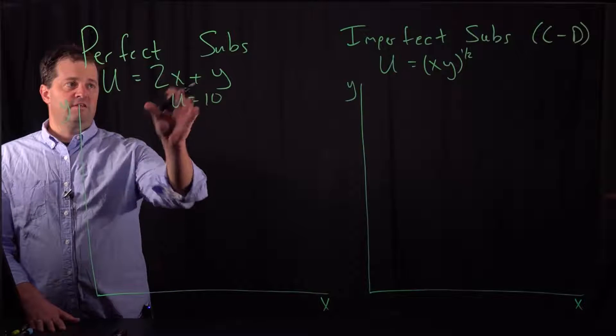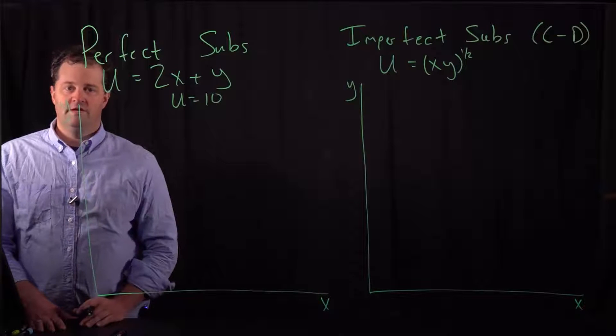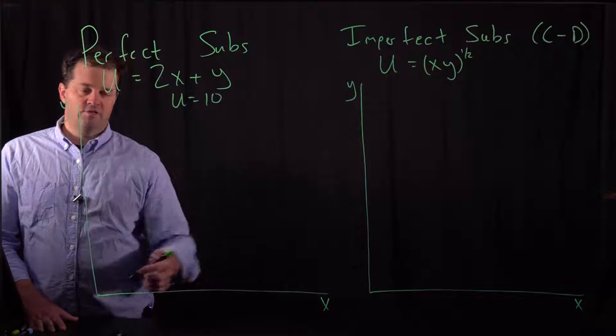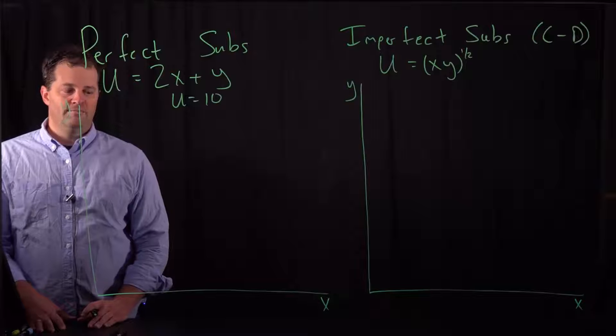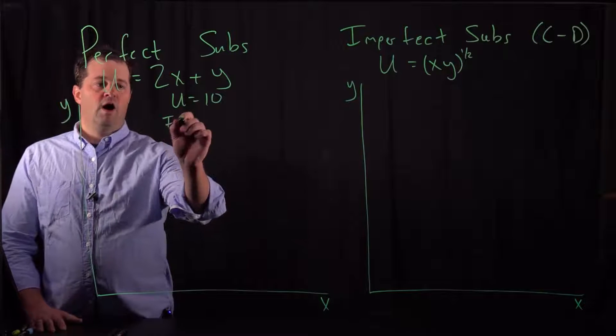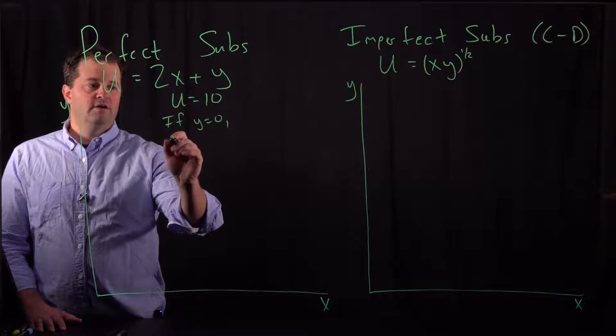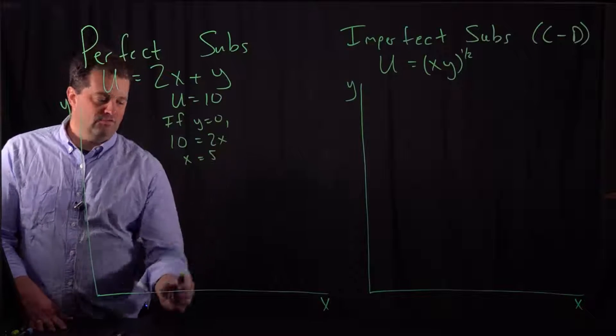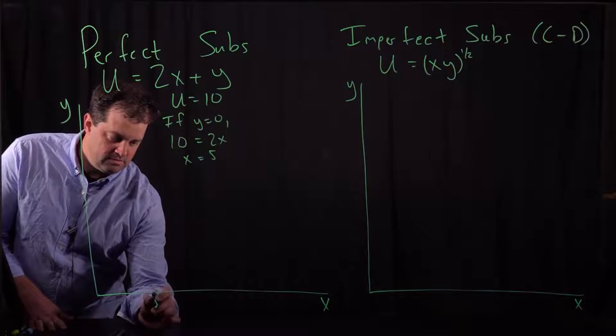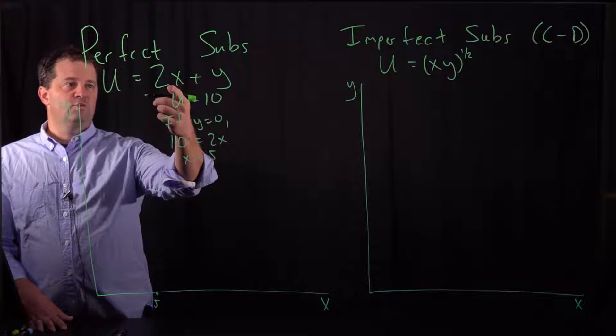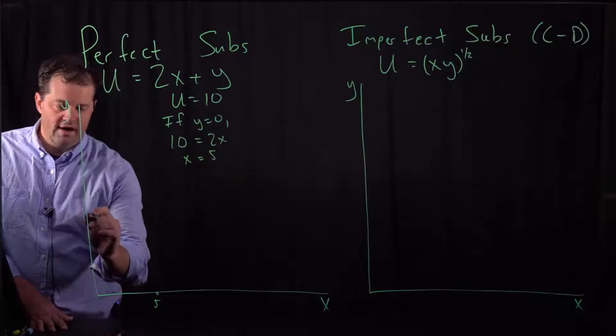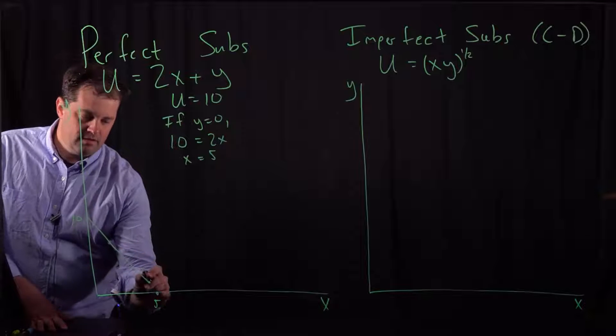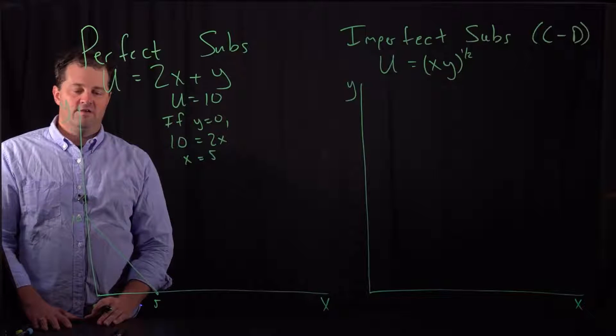Now to do that, because this is a linear function, all I need to do is figure out how much Y the consumer would need to get utility to 10 if he or she consumed no X, and then vice versa, how much X they'd need if they didn't consume any Y. So let's start here and think about the X intercept. If Y equals 0, then I need to solve out utility equal 10, and that's pretty easy to do. I get X equal 5, and then obviously if the consumer doesn't have any X, they'd need 10 units of Y to reach the utility level equal to 10. And because that's a linear function in X and Y, you just can connect the dots.